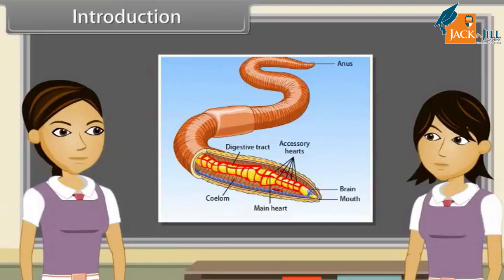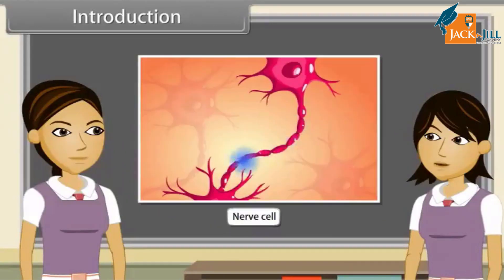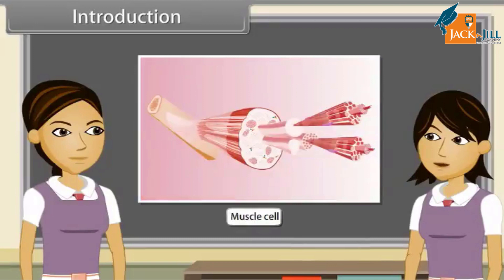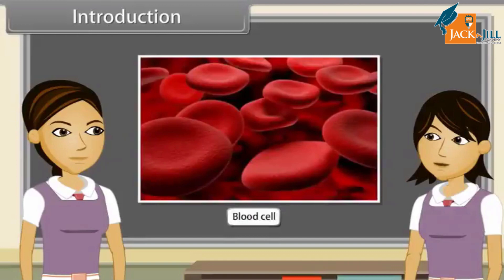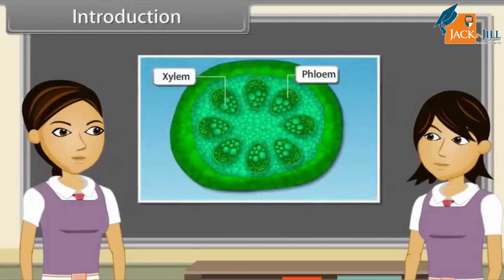But what happens when there are so many similar cells as in multicellular organisms? In multicellular organisms, cells are specialized to carry out a few functions efficiently. Each specialized function is done by a group of cells. For example, nerve cells carry messages from the brain to every part of the body, and muscle cells contract and relax so that movements are caused.